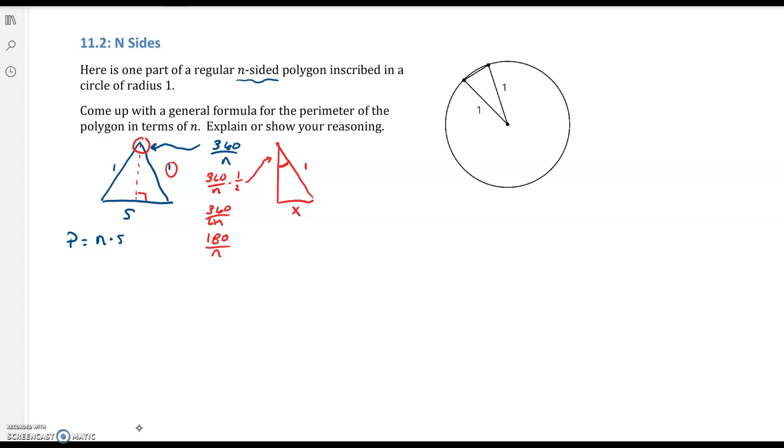Now I know that this X side is opposite my angle. So if I take the sine of that 180 over N, that's going to be equal to the opposite, which is X, all over 1. So this small leg of my right triangle - multiply both sides by 1 if you need to see it - this small side X is equal to the sine of 180 divided by N.